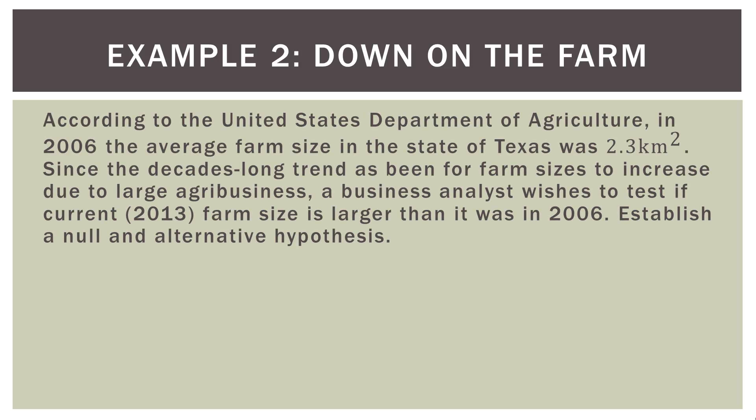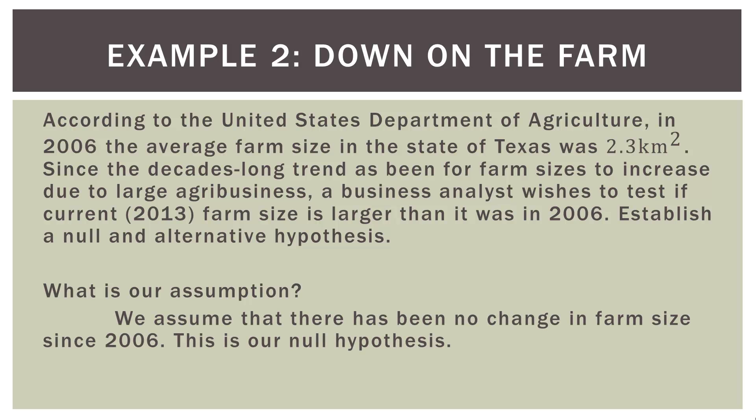Example two: down on the farm. According to the USDA, in 2006 the average farm size in Texas was 2.3 square kilometers. Since the decades-long trend has been for farm sizes to increase due to large agribusinesses buying up land, a business analyst wishes to test if the current 2013 farm size is larger than it was in 2006. We assume there has been no change in farm size since 2006 — this is our null hypothesis.